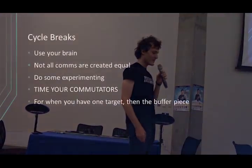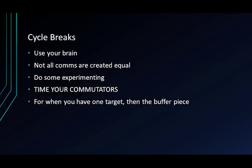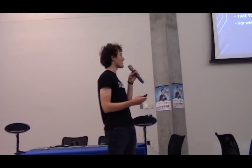Sometimes you're going to have to cycle break — there's just no getting around it. This is where experience comes in. Not all commutators are the same speed; some are going to be way faster than others. You have to experiment and time your commutators. When you get to a cycle break, you can see: I can shoot to this piece and do a really fast one in half a second, or shoot to another piece and it would take two seconds. You have to think and realize some algs are faster than others and force your way into those.